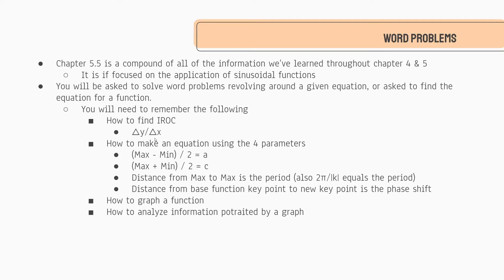For instantaneous rate of change it's a little bit more complicated. You need to find a point and a really really close point to it. So if we were talking about the instantaneous rate of change at six hours, our first point would be at t equals six and our second point would be at t equals 6.001, and that would allow us to find the instantaneous rate of change.